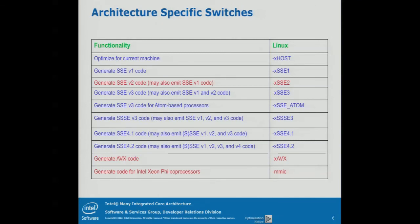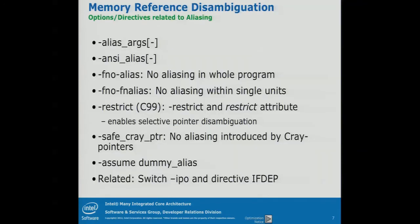This is probably the most important part of those slides: this particular switch — dash a mic — to tell the Intel compiler to actually generate code for the MIC architecture. And since vectorization and optimization is key to performance, in particular on MIC, we have all those switches to tell the compiler.